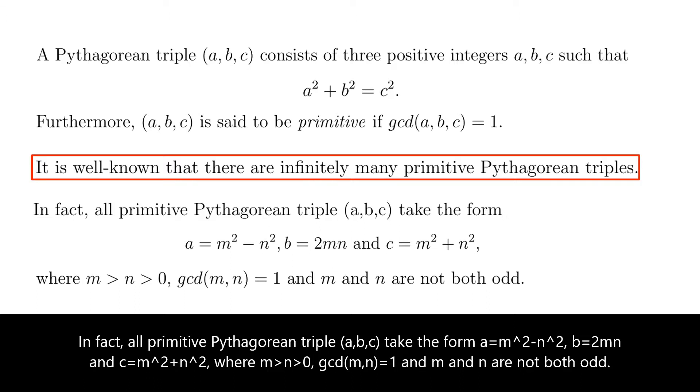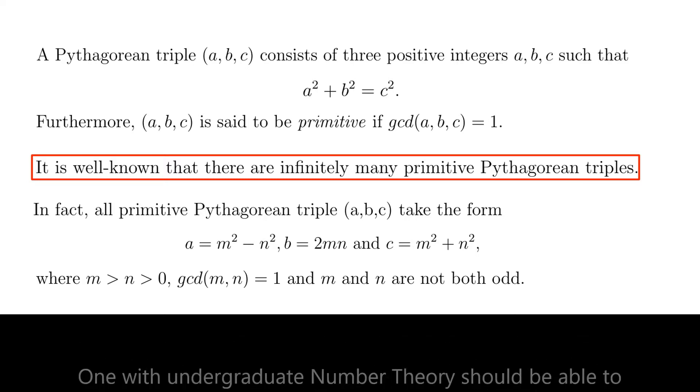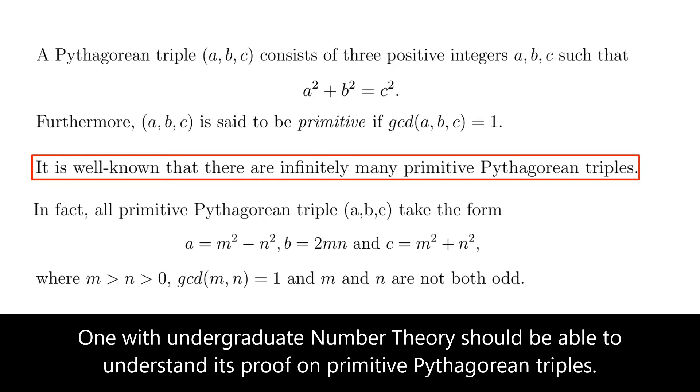Where M is greater than N, which is greater than 0, GCD of M and N equals 1, and M and N are not both odd. One with undergraduate number theory should be able to understand its proof.